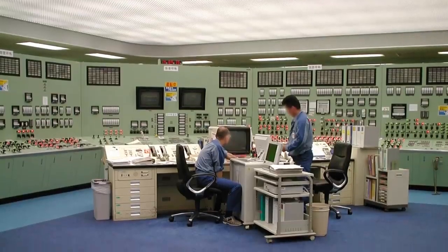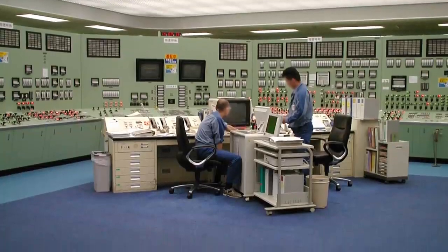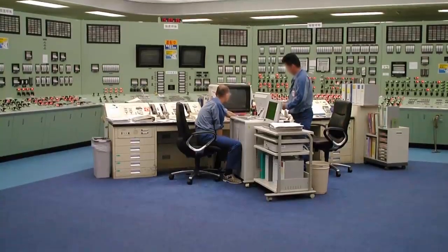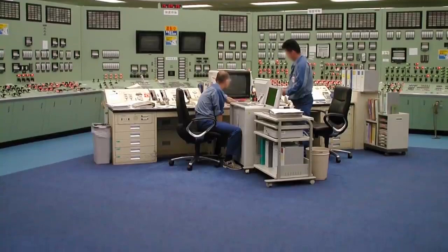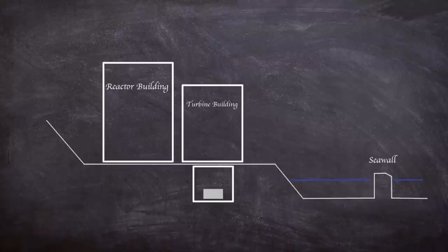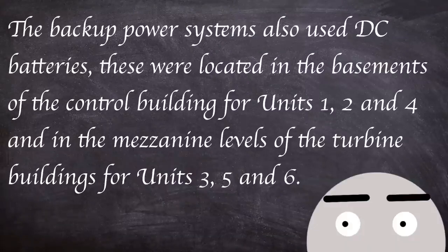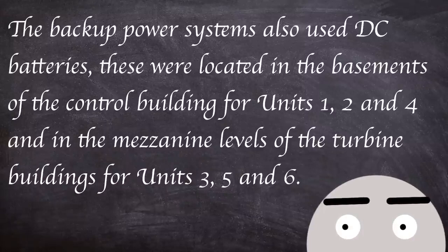The site had three control rooms, each controlling two reactors. Although each reactor had its own panel, this setup allowed close working between reactor teams. Each reactor's emergency diesel generators and equipment were stored underneath the turbine buildings, seven to eight meters below grade.